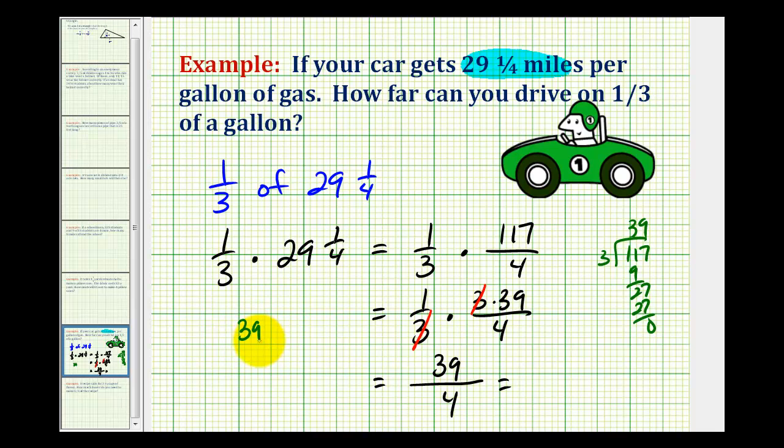So we'll take 39, and divide by four. Well there's nine fours in 39. Nine times four is 36, remainder of three. So 39 fourths is equal to nine, and our remainder over our divisor will give us three-fourths.